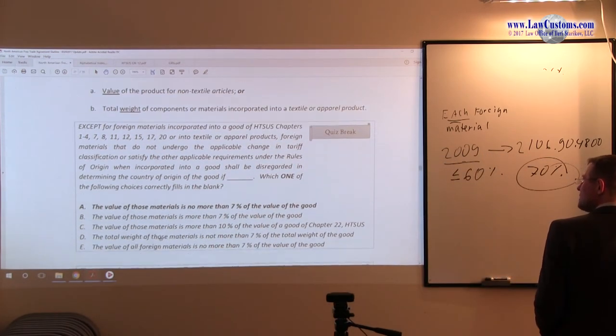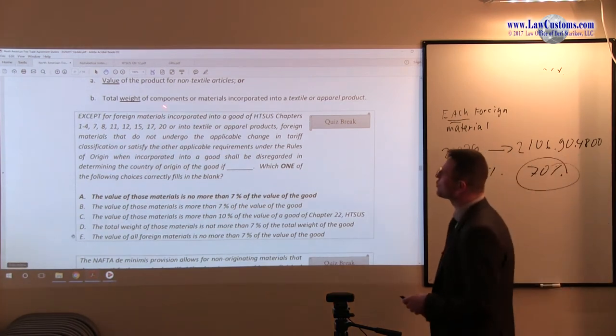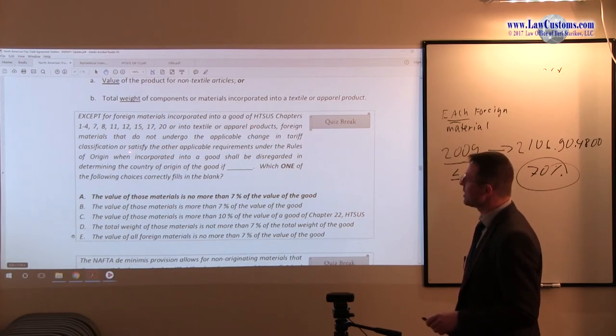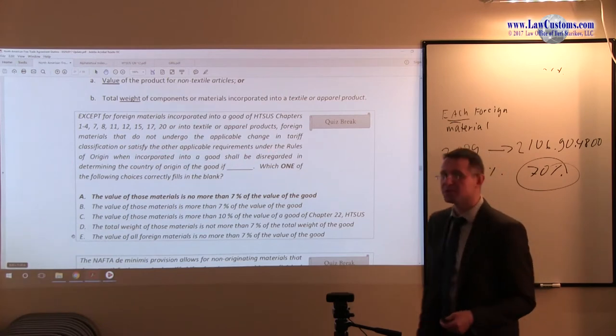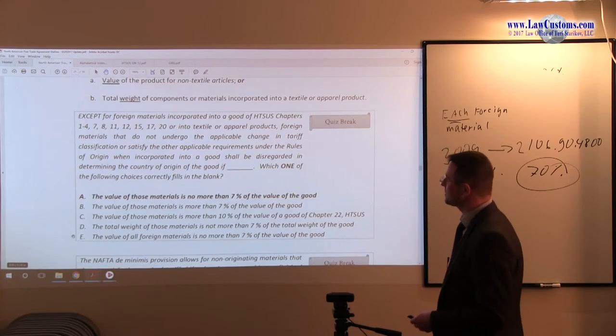Let's see how examiners test you on this topic. So except for foreign materials incorporated into the good under HTS, those are the exceptions, we'll get to them. Materials that do not undergo applicable change in tariff classification or satisfy any applicable requirement under the rules of origin when incorporated, they can be disregarded and the only reason they can be disregarded is because of that de minimis requirement.